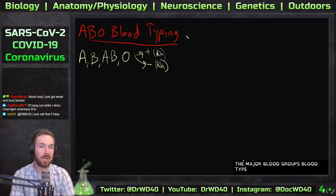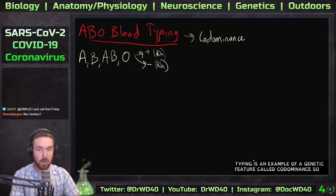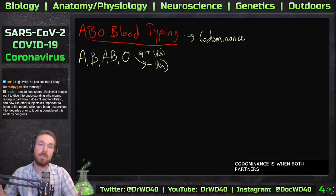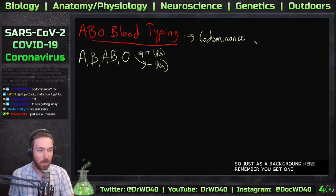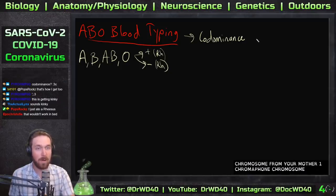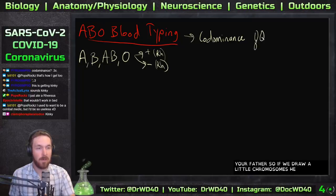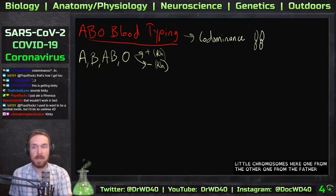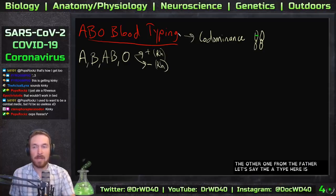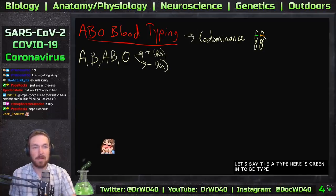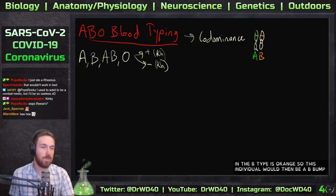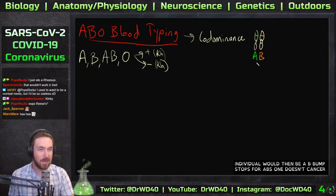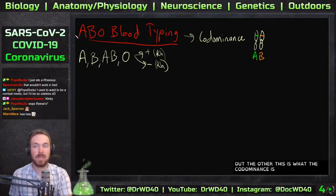Blood typing is an example of a genetic feature called co-dominance — when both partners dominate. Remember, you get one chromosome from your mother and one from your father. So if we draw chromosomes here, one from the mother and one from the father, let's say the A type is green and the B type is orange — this individual would be AB. One doesn't cancel out the other; that's co-dominance.